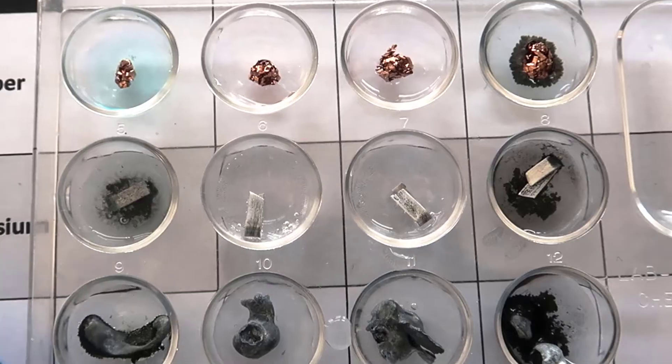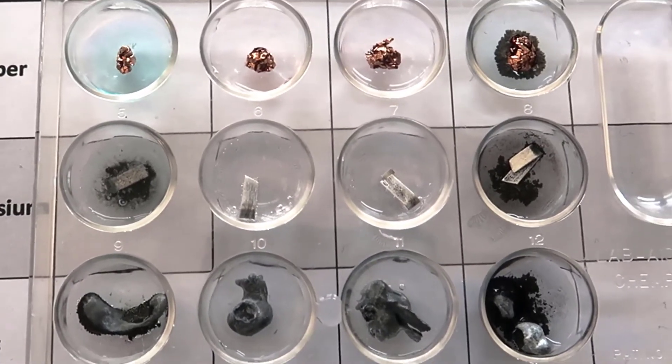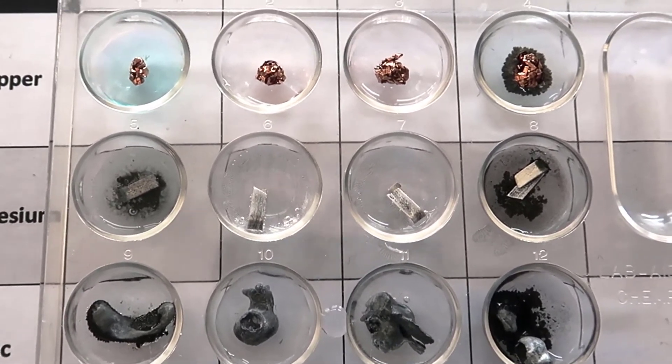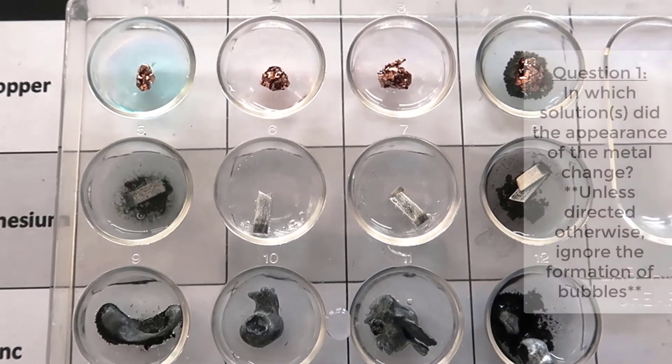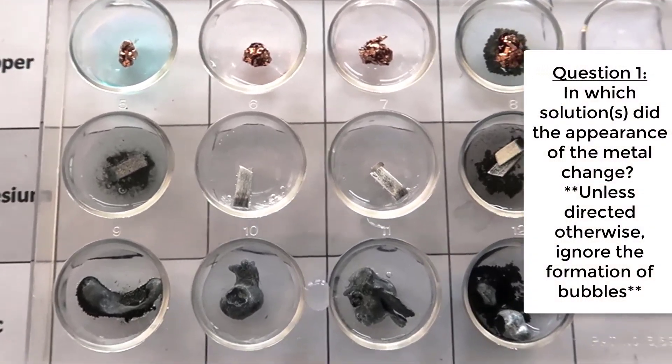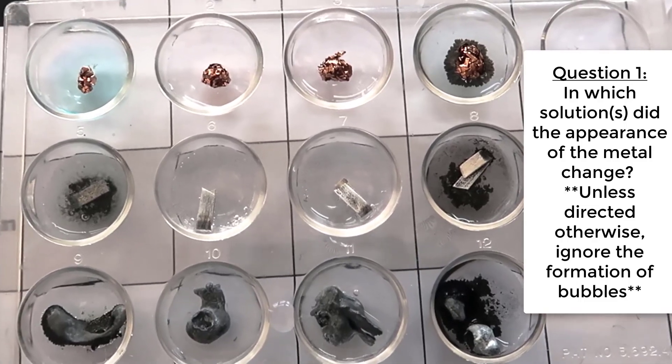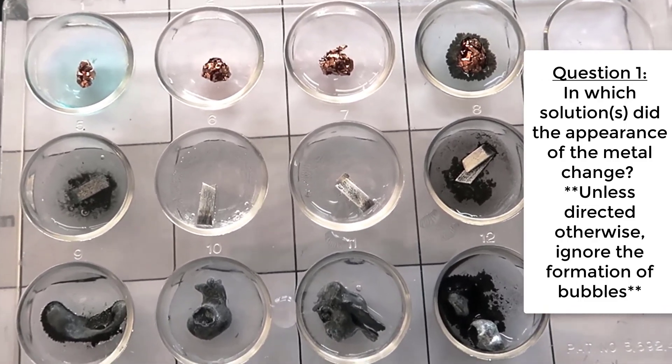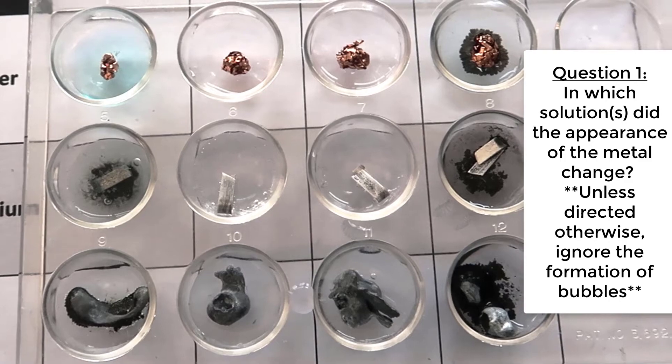Hopefully you recorded your observations. If not, go back and rewatch that part of the video. And then what you're going to do is answer the following questions. In which solutions did the appearance of the metal change? You're going to ignore if there were any bubbles formed. You're just looking to see if there was any change. Perhaps some color or there looked like something was produced.